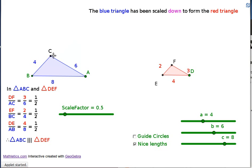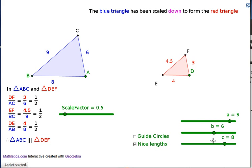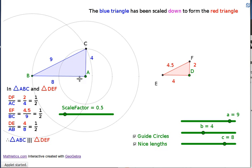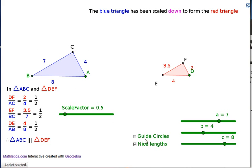And you can always go and set your triangles up so that they've got nice lengths, draw some guide circles around so you can see that what is happening. But the idea of the scale factor stays the same, 7, 3.5.